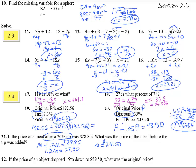Number 22. The price of an object dropped, so that's going to be a subtraction on this percent, down to 59.50. What was the original price? So we're looking for the original price again. So the price dropped down 15% of that price to 59.50.